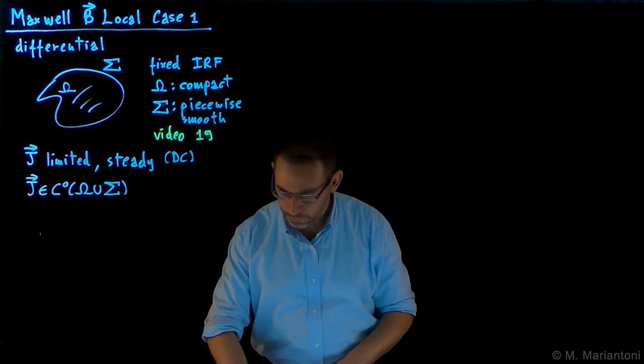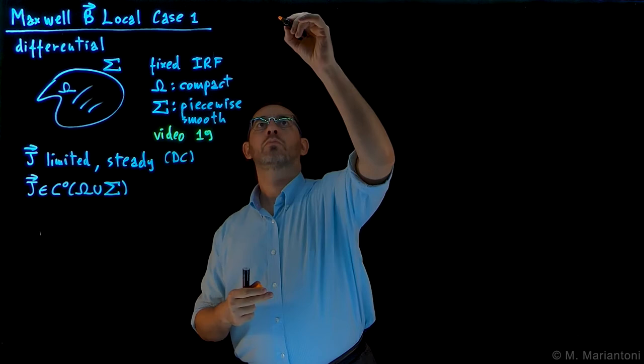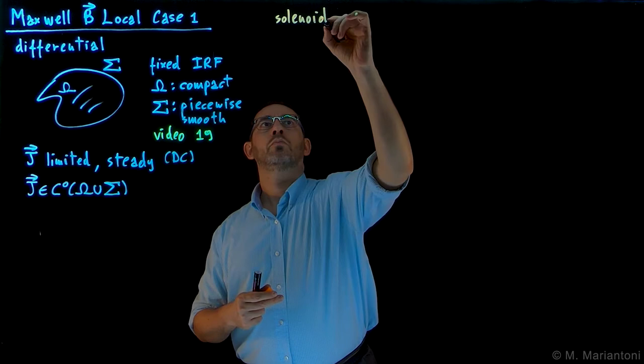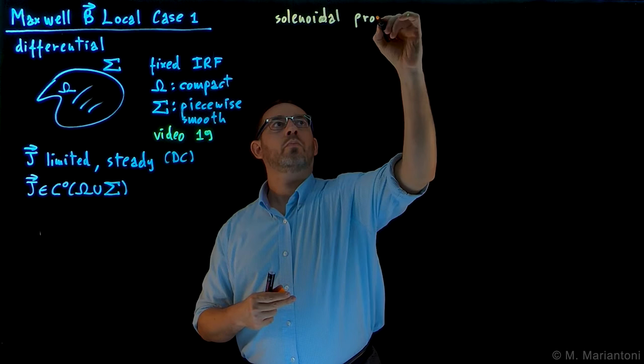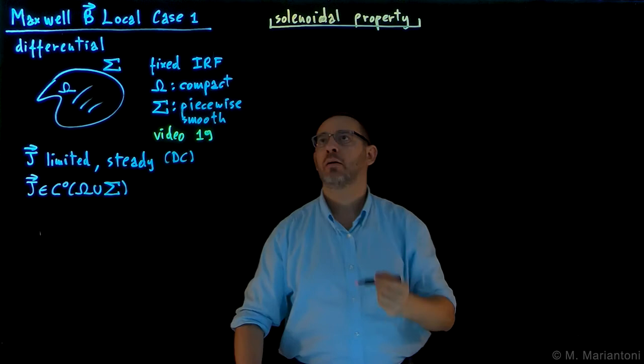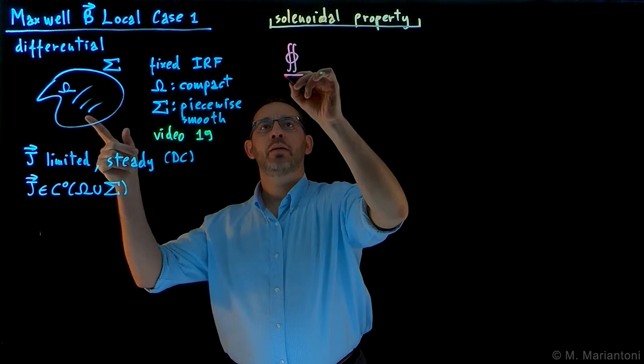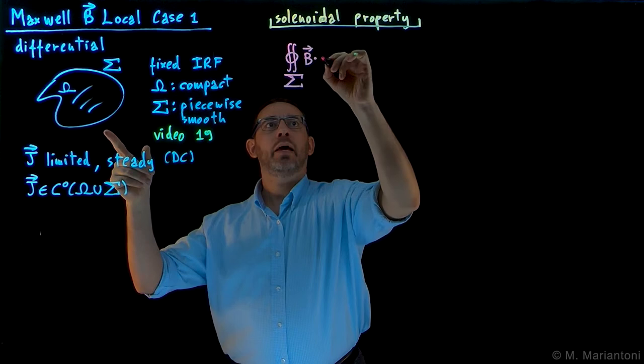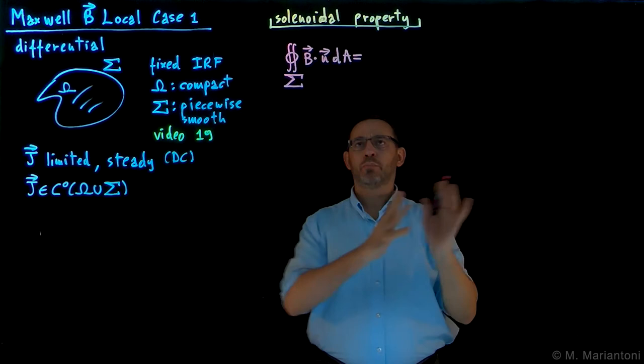So let us consider, for example, the solenoidal property to begin with. We know that in integral form, the solenoidal property tells us that the surface integral on any closed surface of B dot dA has to be equal to zero.